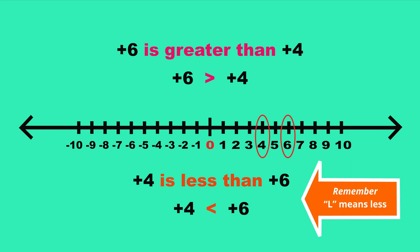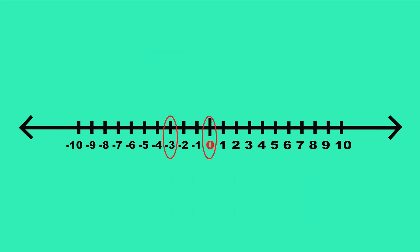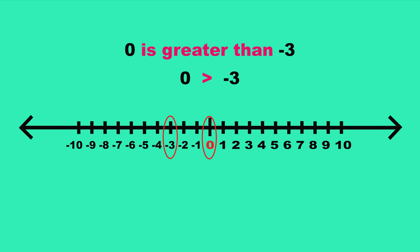Notice that the less than symbol looks like the capital letter L. Now let's compare 0 and negative 3. 0 is further right, so 0 is greater. We write 0 is greater than negative 3, or negative 3 is less than 0.